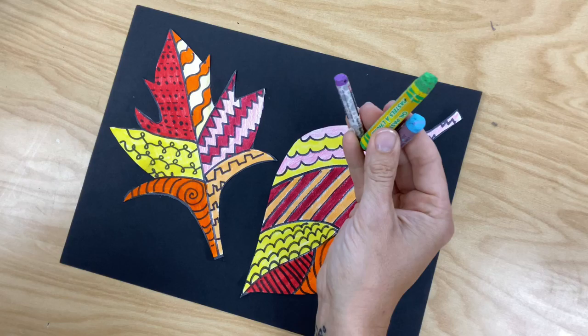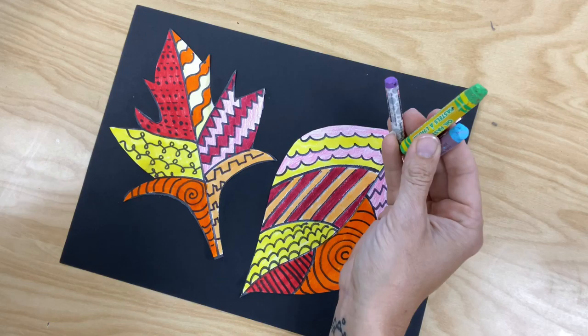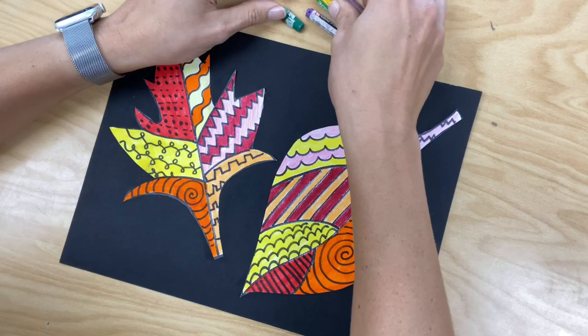Cool colors are purples, greens, and blues. Cool colors make us think of things that are cool, like water or a night sky.